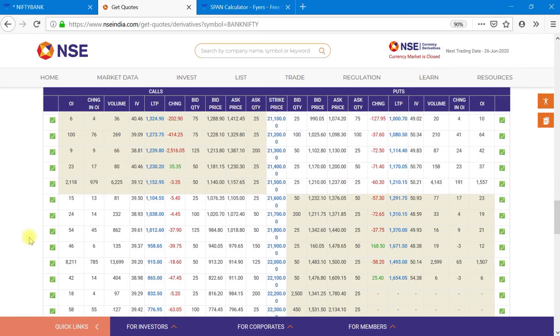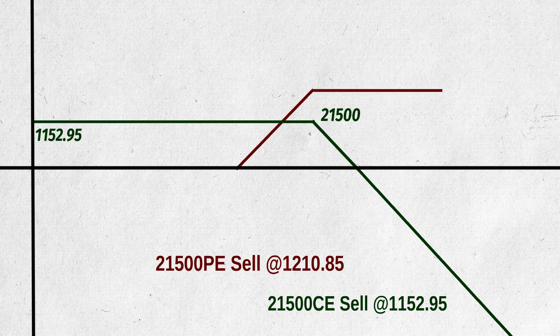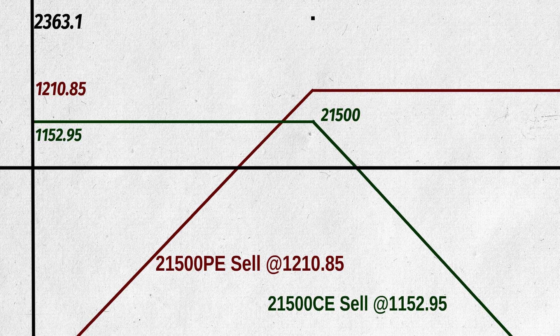In the same example, at the same time, if we think that there will be no volatility, let us see the payoff diagram for shorting both at the money options. Maximum profit comes when price expires at exactly 21,500. On the downside, we are in profits till the price falls to 21,500 minus 2,363.1, which is the combined premium we got, so till 19,142.9, we will be in profits.